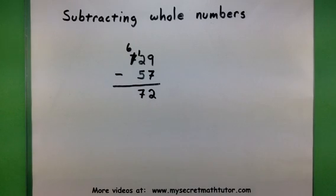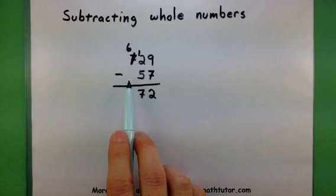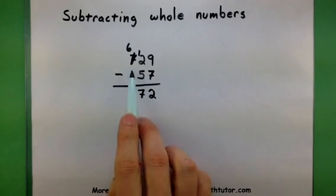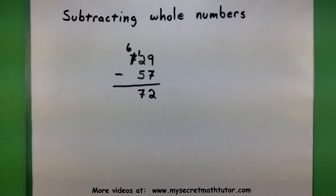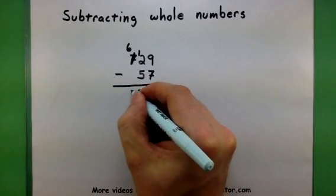Alright, we're on a roll. On to the last column, I have 6 minus, uh-oh, now it looks like I'm missing a number. Well, if you're missing a number in the column, that's okay. Just treat it as a 0. So 6 minus 0, 6.